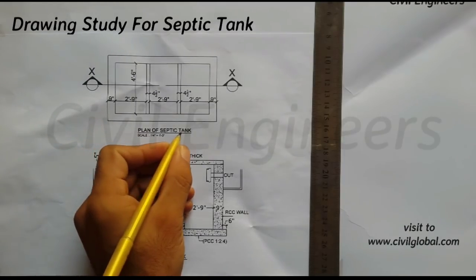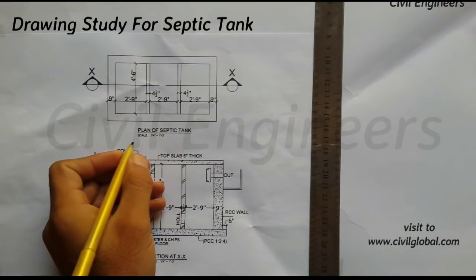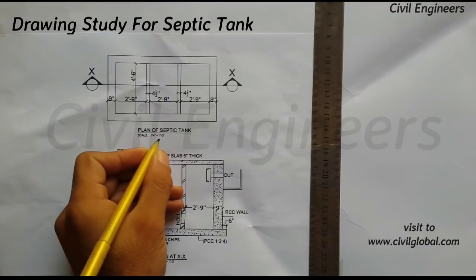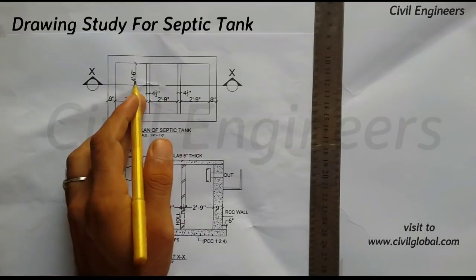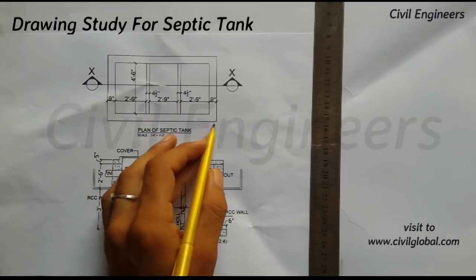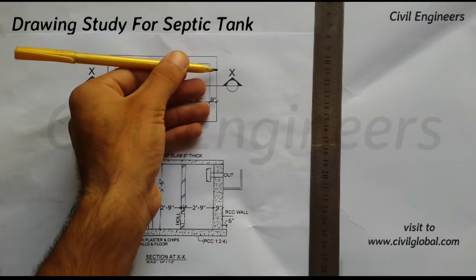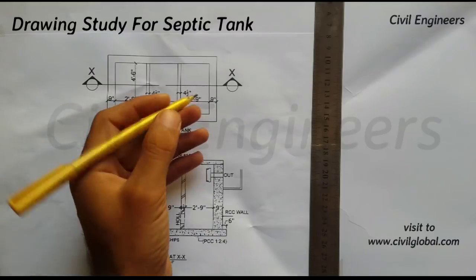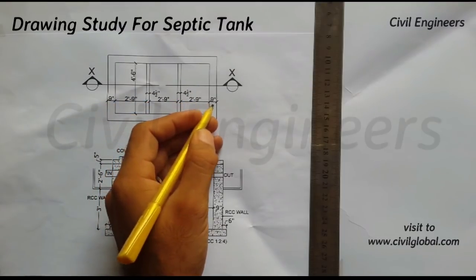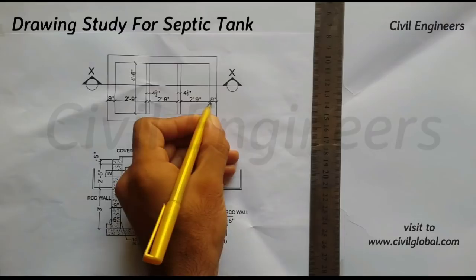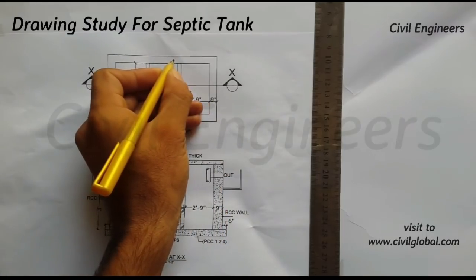This is the plan of the shifting tank. I have taken the scale 1/4 inch equals 1 foot. The length of this shifting tank is 10 feet 3 inches, and the breadth of the shifting tank is 6 feet. The outer boundary walls are 9 inches.